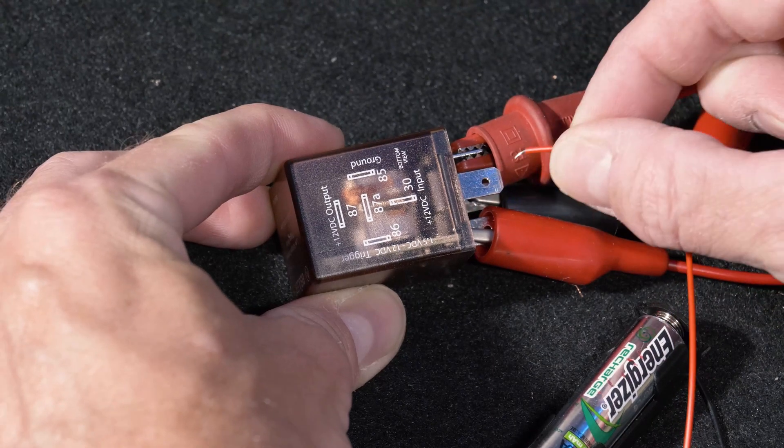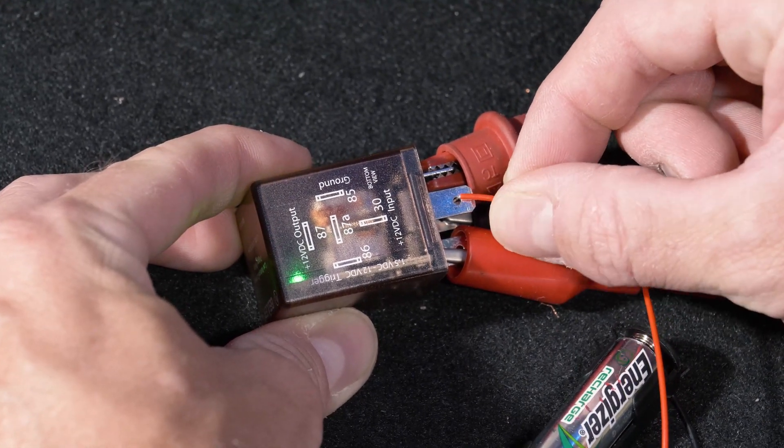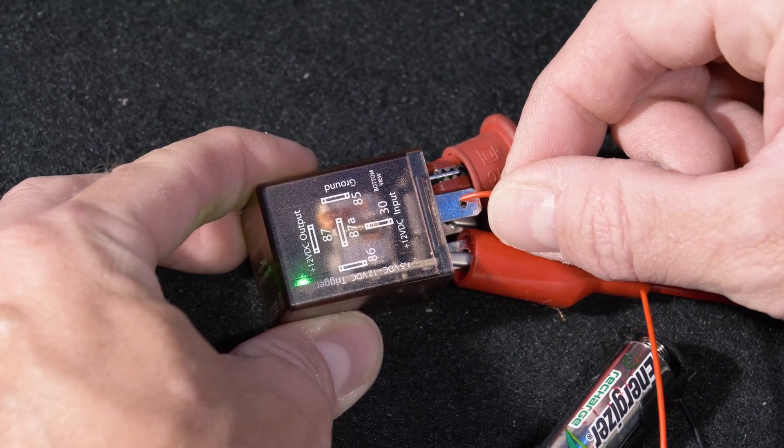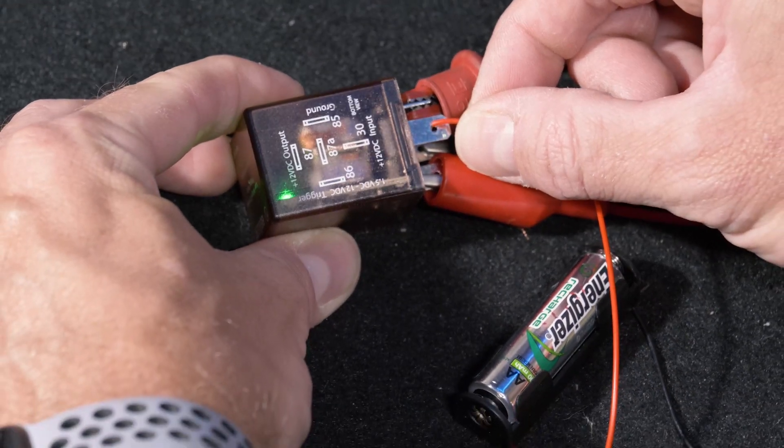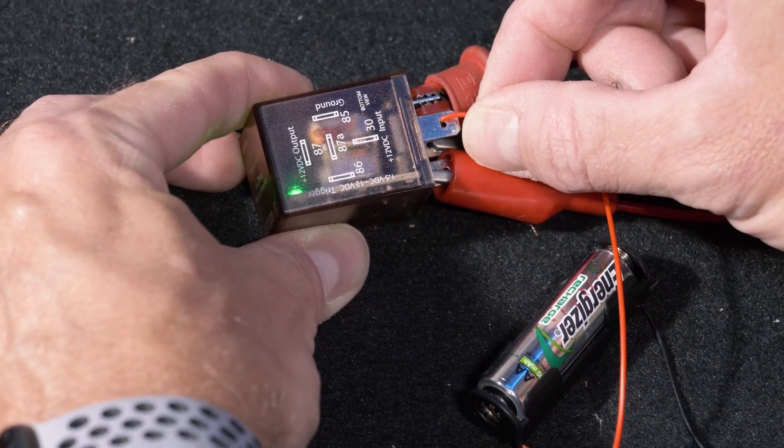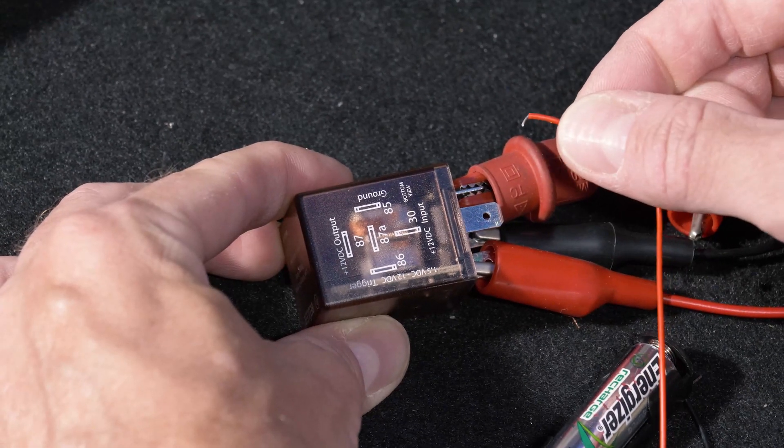This relay is not a time delay relay, meaning the 1.5 volt signal that we're getting from our AA battery here must be present at all times in order for this relay to stay on. The minute you release it, the relay turns off.